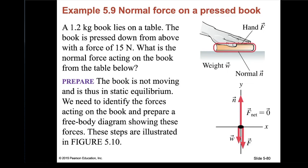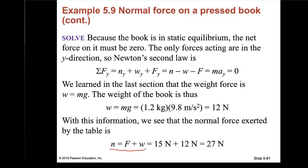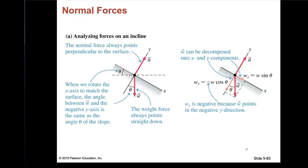Example: a 1.2 kg book lies on a table and is pressed down with a force of 15 N. What's the normal force from the table? Forces on the book: weight (= 1.2 × 9.8 ≈ 12 N downward), pressing force (15 N downward), and normal force upward. They balance, so N = weight + pressing force = 12 + 15 = 27 N.